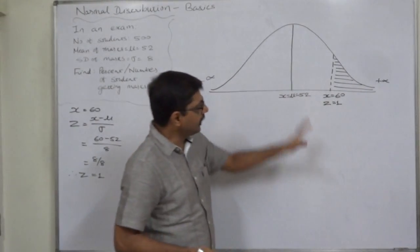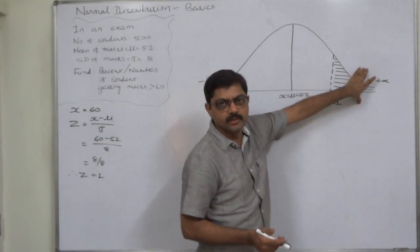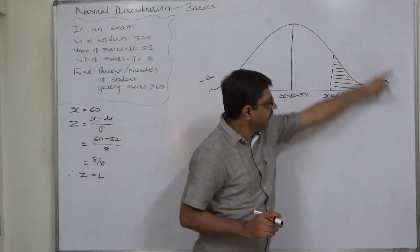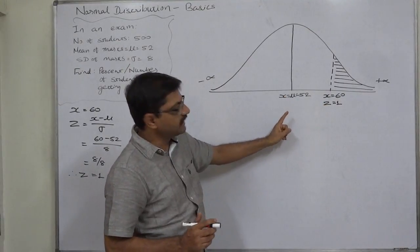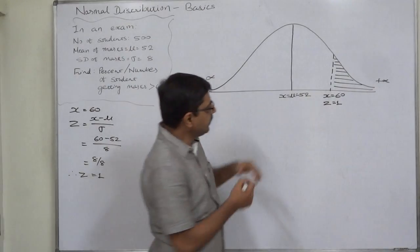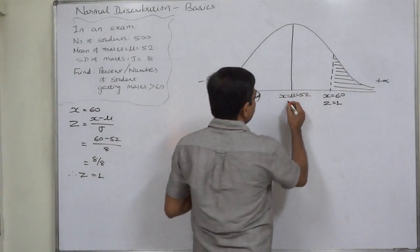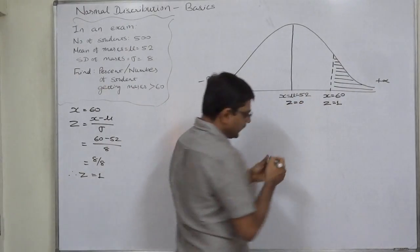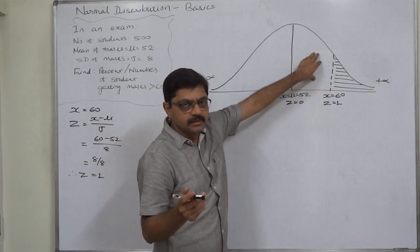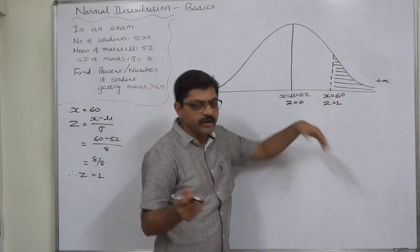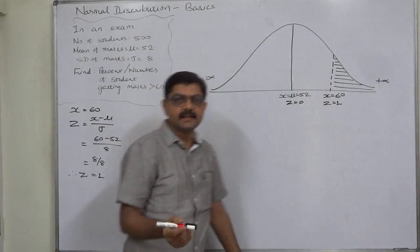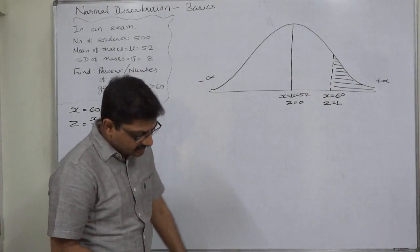This is the case of an extreme right-hand side region. We cannot calculate this probability directly, but we know the area of the entire right-hand side region is 0.5, and the area between Z=0 and Z=1 is 0.3413. If we subtract that area from 0.5, the remaining area is the probability of X greater than 60.